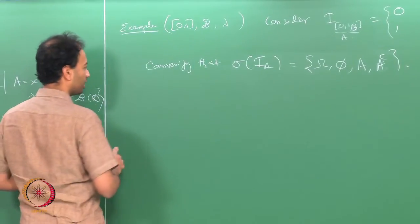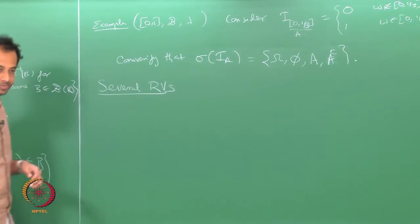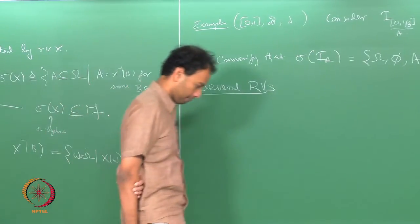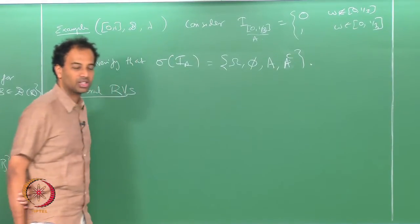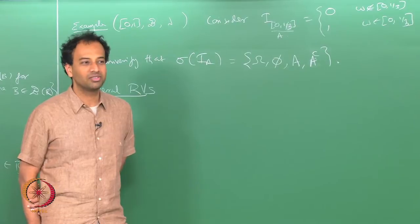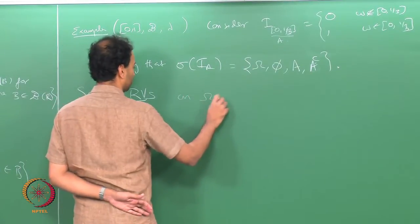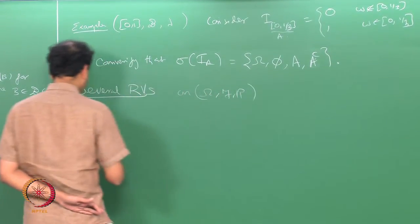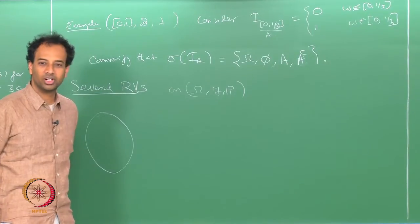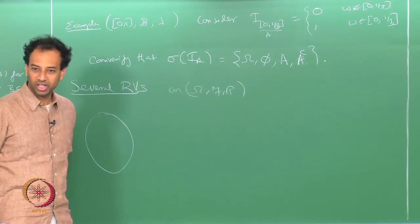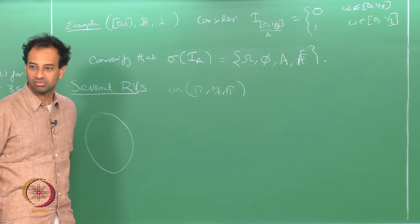We will now move on to the next topic: several random variables. Whenever we consider more than one random variable, all these random variables will live on the same probability space (Ω, F, P). They are not random variables living on different probability spaces — they are all defined on the same (Ω, F, P), and each of them will be a measurable function from Ω to ℝ.